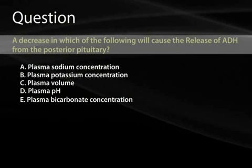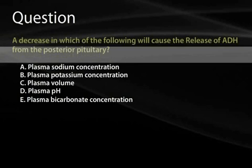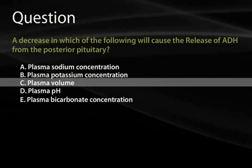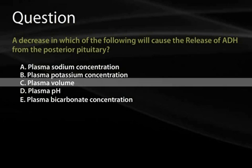Question 11: A decrease in which of the following will cause the release of ADH from the posterior pituitary? A) Plasma sodium concentration, B) Plasma potassium concentration, C) Plasma volume, D) Plasma pH, or E) Plasma bicarbonate concentration. The answer is C — plasma volume. A fall in plasma volume of greater than 10 percent will stimulate the release of ADH from the posterior pituitary to increase water absorption and preserve circulating volume. ADH has no activity on plasma pH, bicarbonate, or potassium concentration.